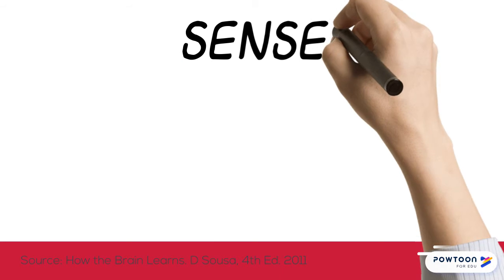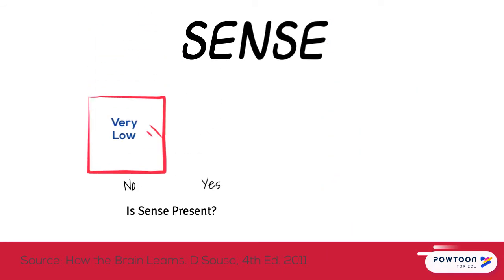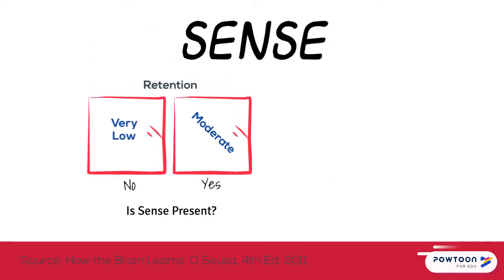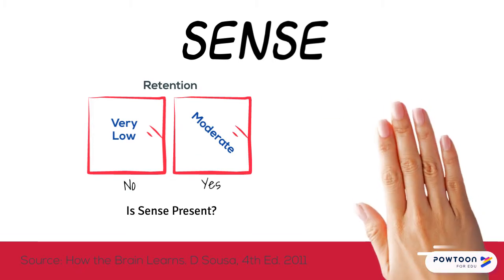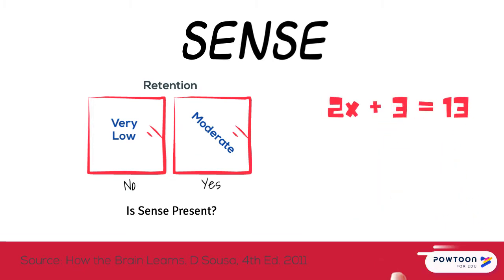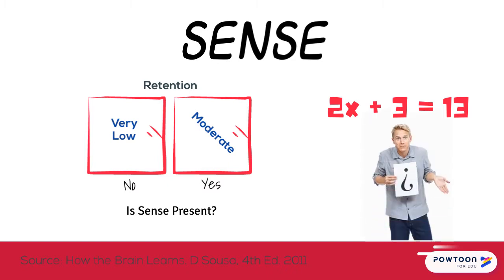Things that make sense but do not have meaning have a lower chance of long-term storage. For example, we might well know how to solve equations such as 2x + 3 = 13, but we might never recognize when we would have to know such a thing.